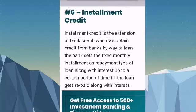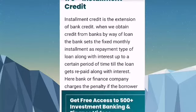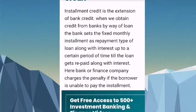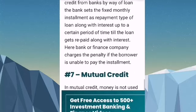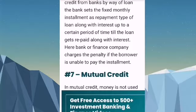Number six is installment credit. Installment credit is an extension of bank credit. When we obtain credit from banks by way of a loan, the bank sets a fixed monthly installment as the repayment type along with interest up to a certain period of time until the loan is repaid. The bank or finance company charges a penalty if the borrower is unable to pay the installment on time. For example, if the repayment date is 5th June and the borrower does not pay on time, they will be fined according to the rules of the bank.